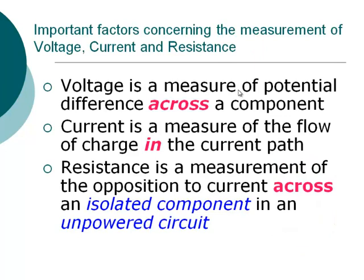Here are some important factors concerning the measurement of voltage, current, and resistance. Voltage is a measure of potential difference across a component — you measure it across the component. When measuring current, you have to break the circuit and put the measuring device in the path of the flow of charge — in the current path. Resistance is measured across an isolated component in an unpowered circuit. Whenever you hook up a multimeter, set it to voltage or current before you turn on power, because if it's set to resistance and you turn on power, you would burn out the multimeter.